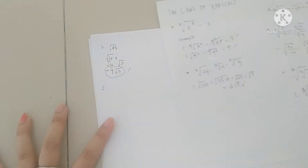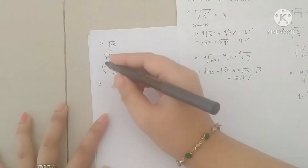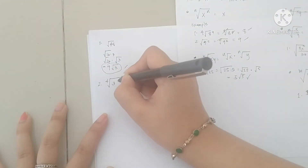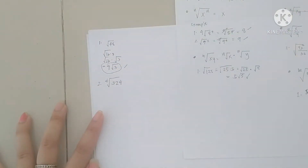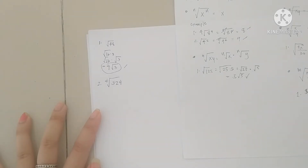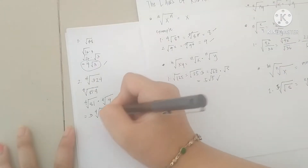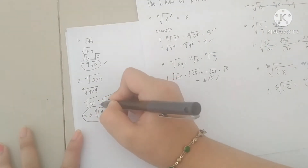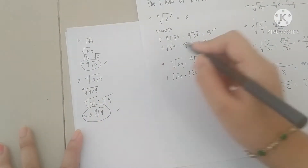Number 2: we have the 4th root of 324. The final answer is 4√8.